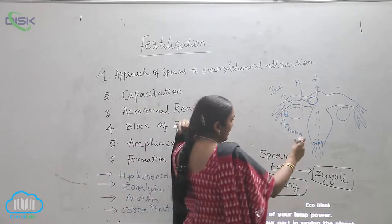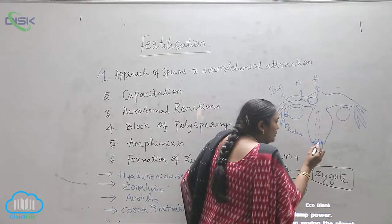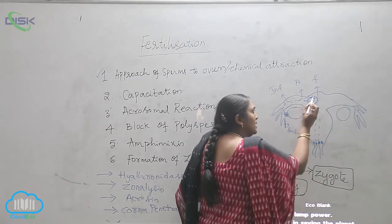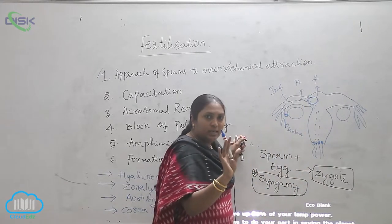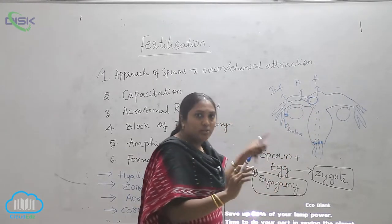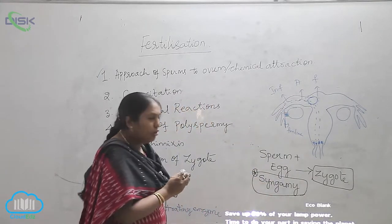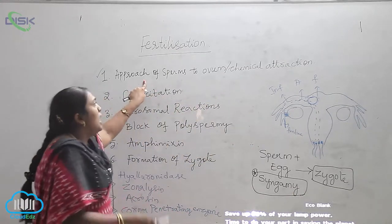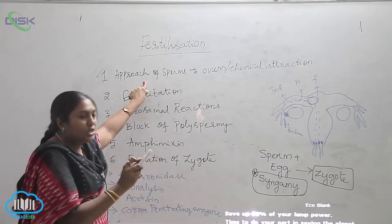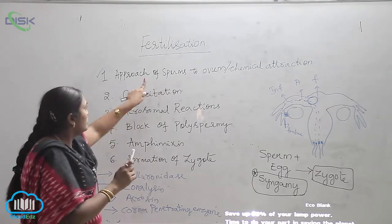On the sperms of humans there will be chemicals present, and even on the egg chemicals will be present. Since sperms do not have any eye, this chemical attraction pulls the sperms nearer to the egg region. This is the first step — the approach of the sperms to the ovum through chemical attraction — and hence fertilization occurs.